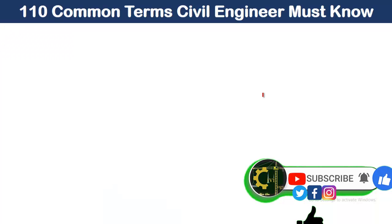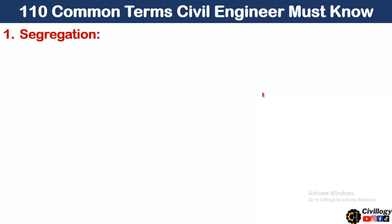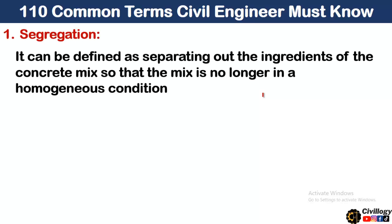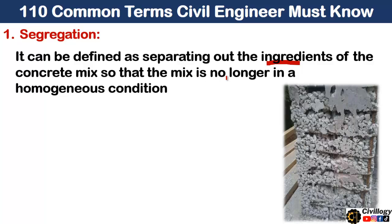The first common term used in civil engineering is segregation, which is related to concrete. It can be defined as the separating out of the ingredients of concrete — namely coarse aggregate, fine aggregate, water, and cement. Segregation is the phenomenon in which these ingredients separate out of the concrete mix so that the mix is no longer in a homogeneous condition.